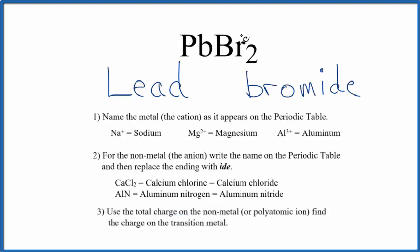So here it's bonded to bromine. Bromine, when it forms ionic bonds, it has a 1 minus ionic charge. We have two of these. 2 times 1 minus, that's 2 minus. Lead has to be 2 plus.